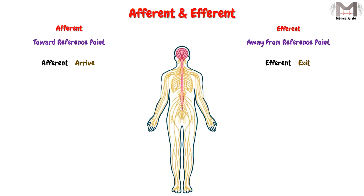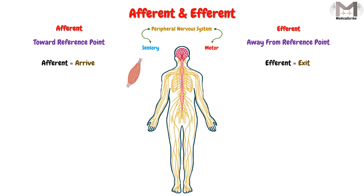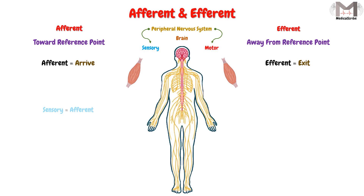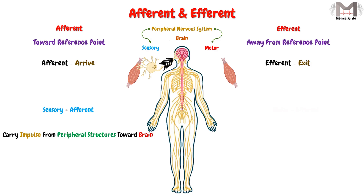In the nervous system, we divide the peripheral nervous system mainly into sensory and motor nerves. The sensory neuron carries the impulse or input from the tissue or muscle toward the brain, while the motor neuron carries the impulse or output from the brain toward the peripheral tissues. The reference point here is the brain. So the sensory neuron is considered afferent, because it carries the impulse from the peripheral structures toward the brain — the flow direction is toward the reference point.